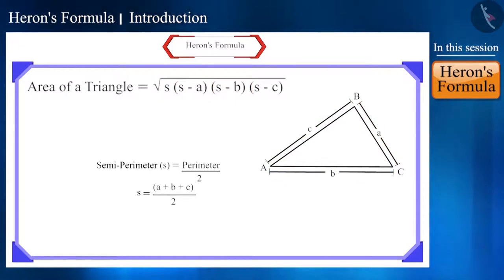And this expression in brackets, s minus a, s minus b, s minus c, represents the product of all the terms in parenthesis by subtracting the measurement of all the sides from the semi-perimeter.